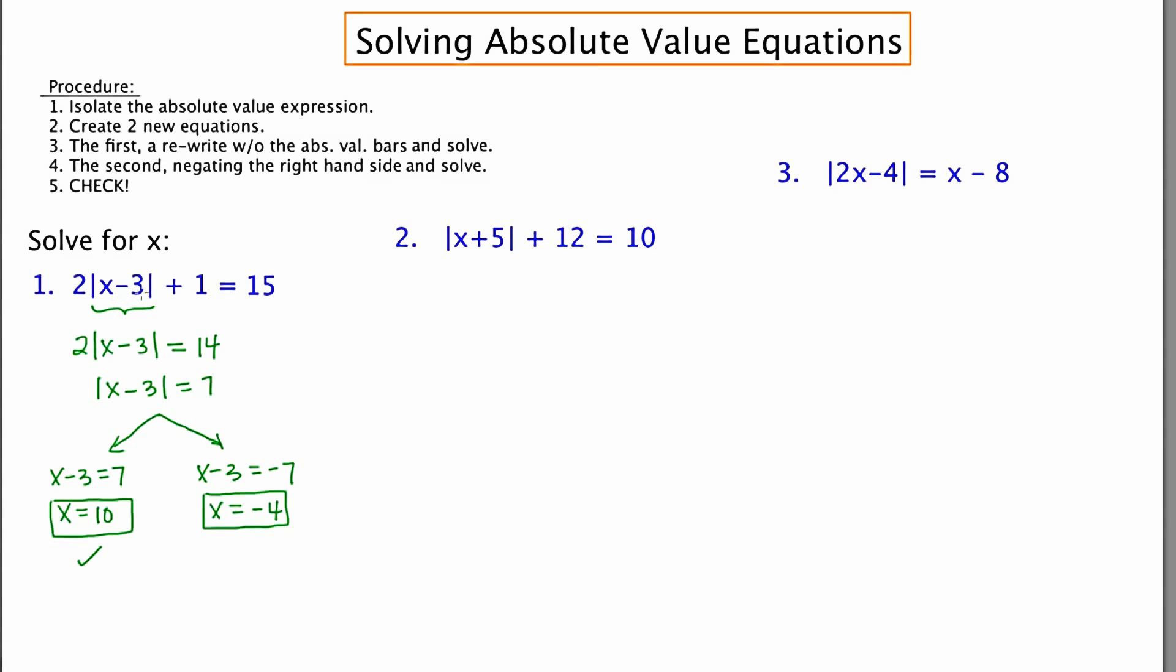Checking -4: -4 - 3 is -7. The absolute value of -7 is 7, and that's the same result as before. So these both work, so there are two answers.